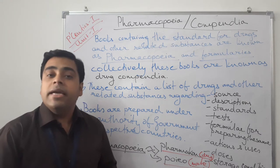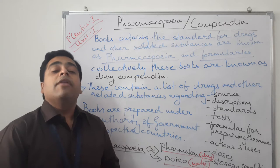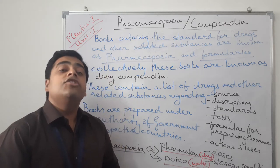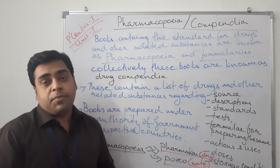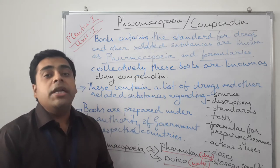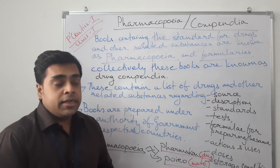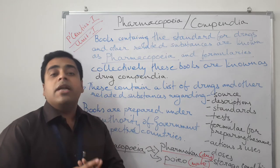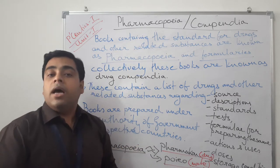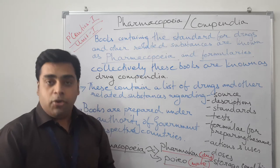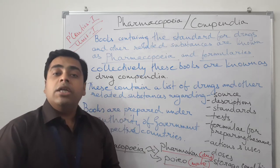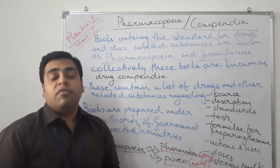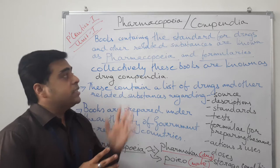Hello everyone, welcome back to PharmaE class. I am Anindo Koshwami and we were discussing Pharmacopics 1, Unit 1 — the history of the development of the pharmacy profession in India with respect to education, industries, and other aspects. From the earlier topics we have discussed, today our topic will start with pharmacopoeia and compendias or formularies. This is altogether a new term, yet a very important term as far as the pharmacy profession and pharmaceutical subject is concerned.